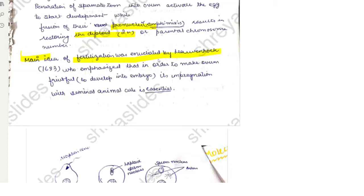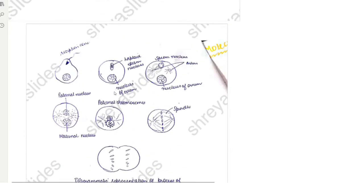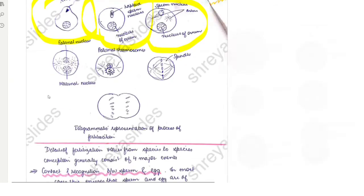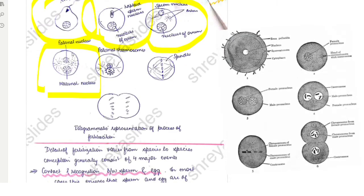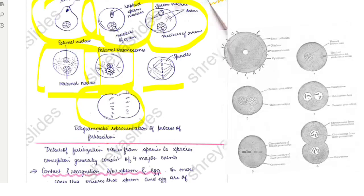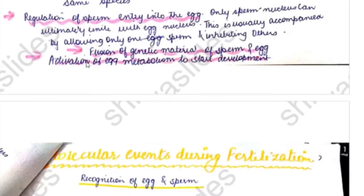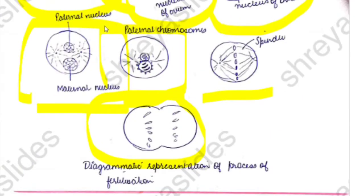The diagrammatic representation shows: first, a reception cone is formed; then the haploid sperm nucleus and the nucleus of the ovum interact; the paternal and maternal nuclei come together along with the paternal chromosome spindle; and finally, cleavage results. Details of fertilization vary from species to species, but conception generally consists of the four major events: contact and recognition, regulation of sperm entry, fusion of genetic material, and activation of egg metabolism.